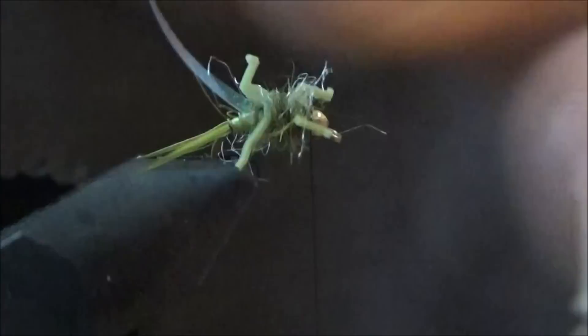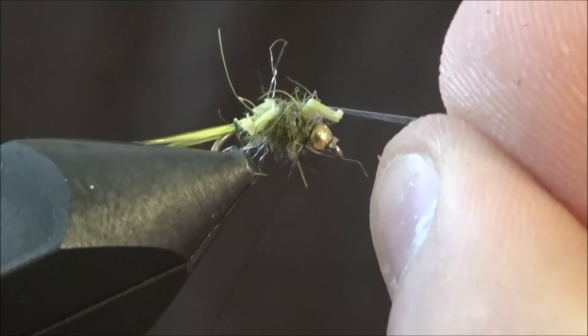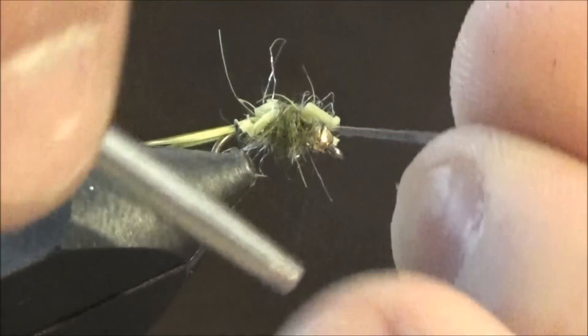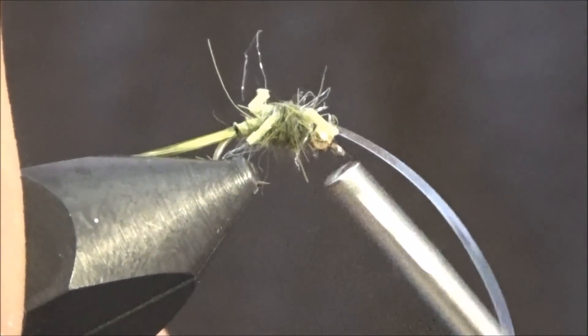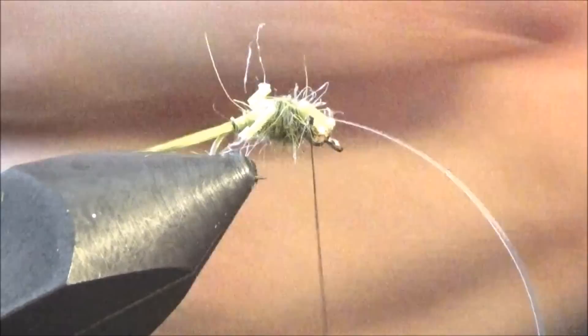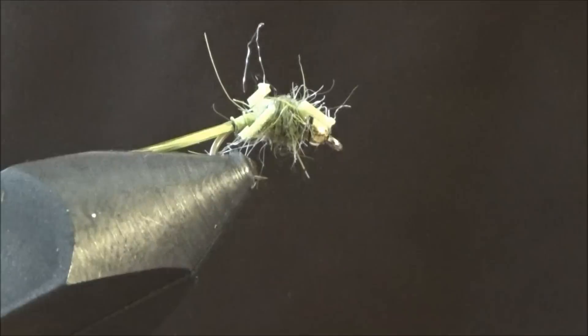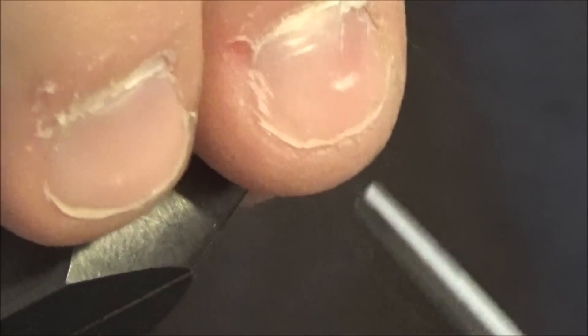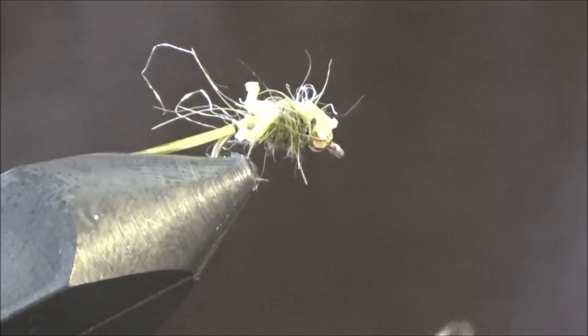Okay, now you take the pheasant tail or your flash you tied in earlier. Pull that over right over the dubbing and the legs. Tie it off right behind the bead. Now, like I said earlier, I use green thread. I ran out, so you're going to be able to see the thread. But if you used green thread, you wouldn't be able to see it. Okay, two or three wraps. Secure that down. Snip it off. Okay, one more good securing wrap here. And whip finish and your fly's done.